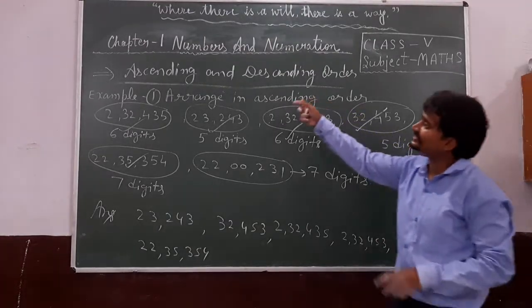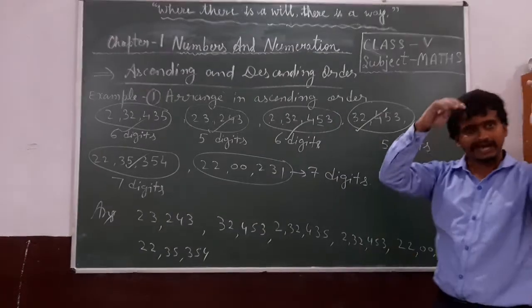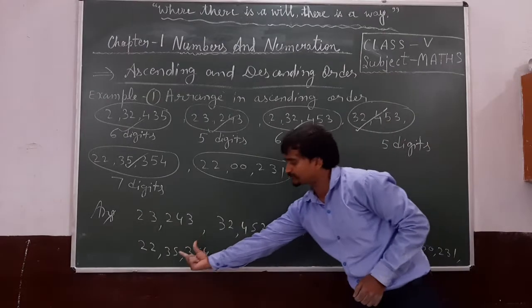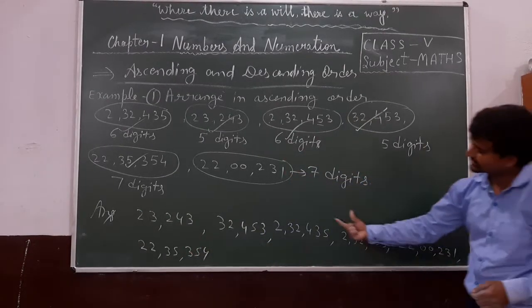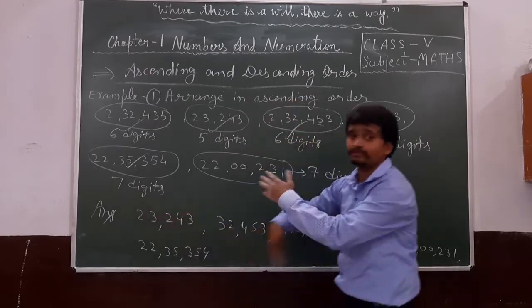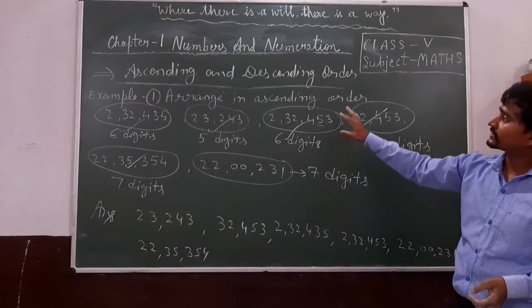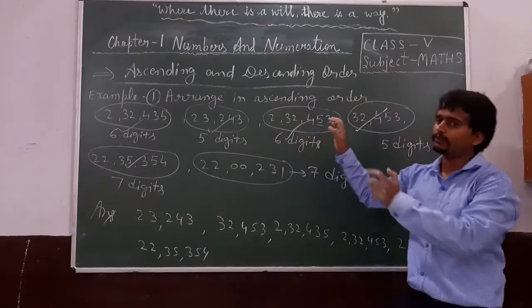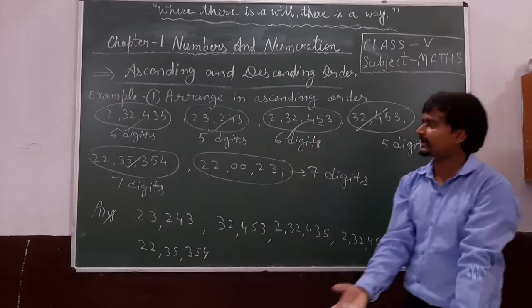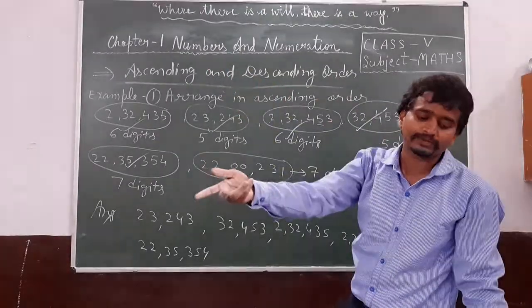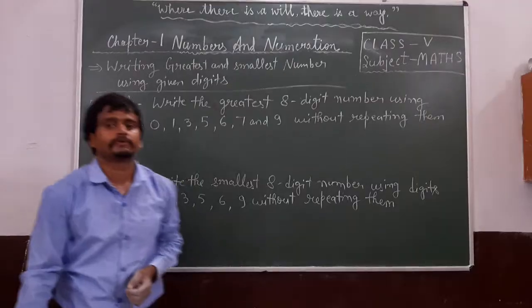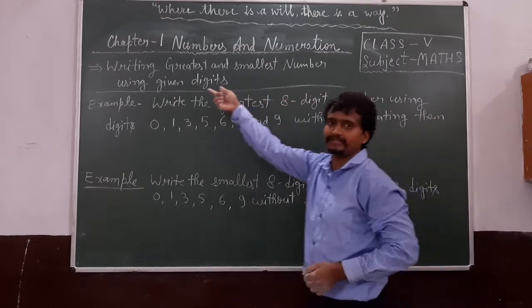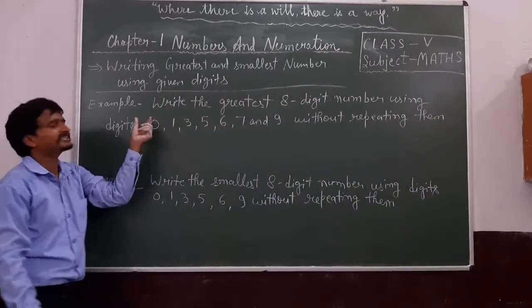Similarly, you can arrange in descending order because descending order means largest to smallest. If you can do ascending order, you can also do descending order. Now we will move to the next heading: writing the greatest and smallest number using given digits.